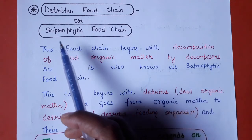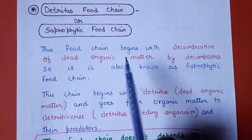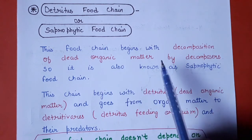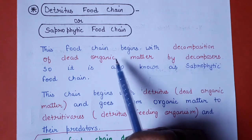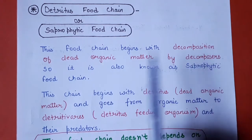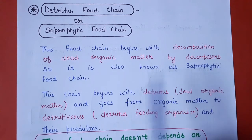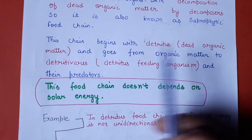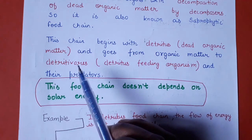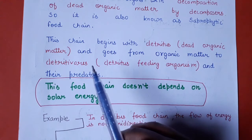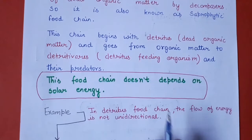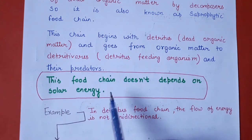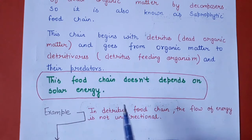Third type hai detritus food chain, jise hum saprophytic food chain bhi kehte hain. Ye food chain hamesha decomposition se start hoti hai — koi bhi dead aur decaying organic matter hai, wahaan decomposers grow kar rahe hain aur decomposition ho raha hai, organic matter ka breakdown ho raha hai. The chain begins with detritus yani dead organic matter, goes to detritivores jo dead aur decaying organic matter par feed karte hain, aur last mein predators tak pahunchti hai. Ye food chain solar energy par dependent nahin hai kyunki ye decomposition se hi start hoti hai.